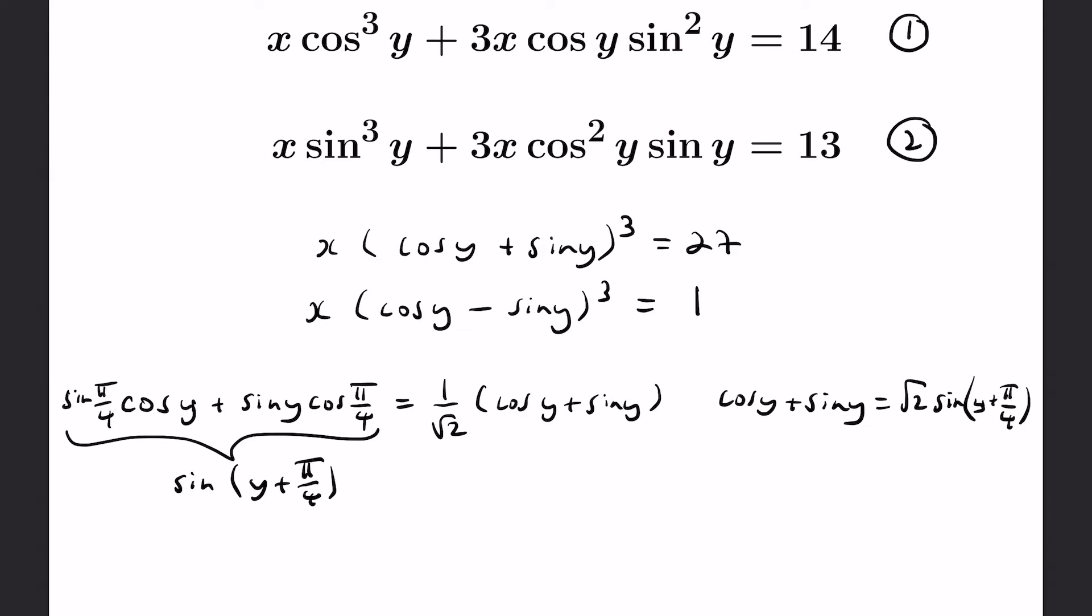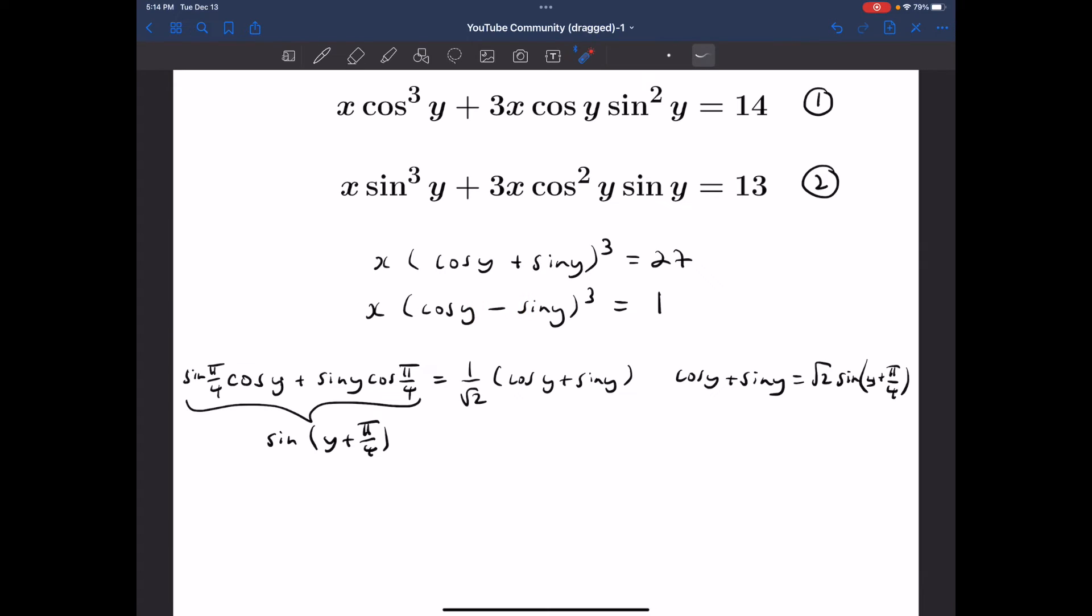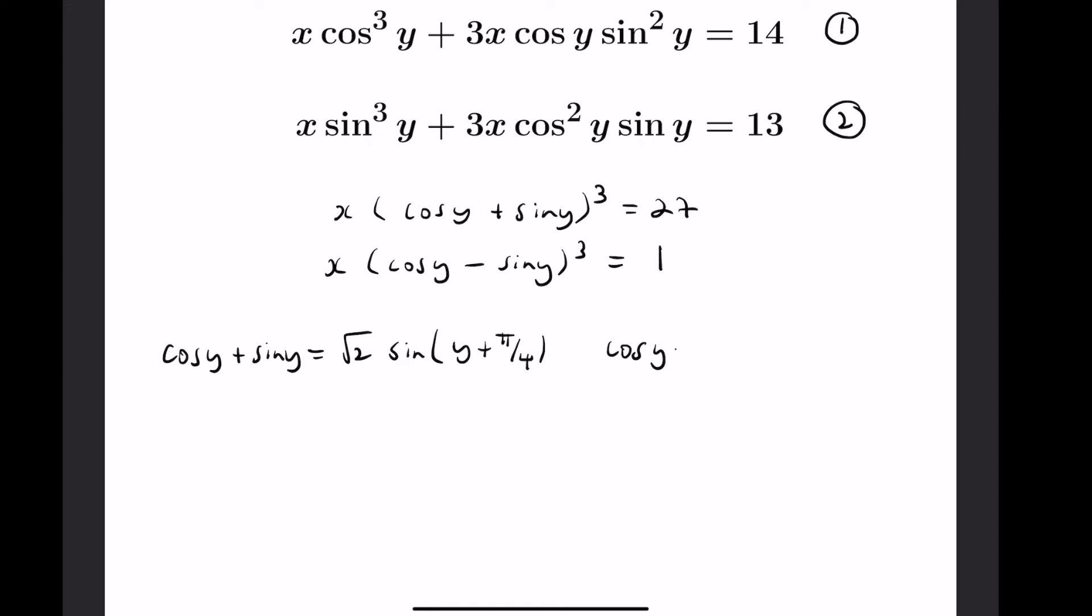So doing this, we could actually do the same thing for cosine y minus sine y, and there we can actually represent this in terms of a cosine. So if we're to do the same thing with cosine y minus sine y, you can actually uniformly multiply by a cosine on each and represent this as root 2 cosine of y plus pi over 4.